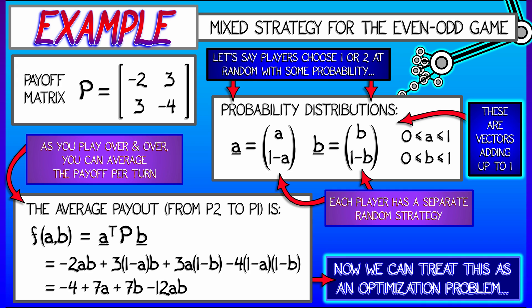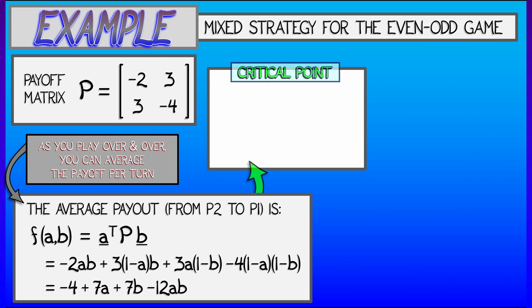So what? Oh wait, this is a function that has two inputs and one output and we want to optimize it because that's the expected payout. So let's do that. How do we optimize? Look for the critical point.